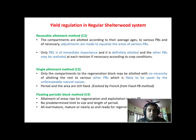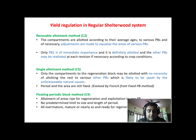Moving to a more relaxed single allotment method, only one periodic block — the mature periodic block 4 — is allotted, whereas none of the other periodic blocks are allotted, because we never know if unforeseen natural causes may cause disruption. However, the period — 30 years or 20 years depending on the rotation and regeneration period — is still fixed, and the area is still fixed. We cannot increase or decrease the period or the area from which we get the yield.